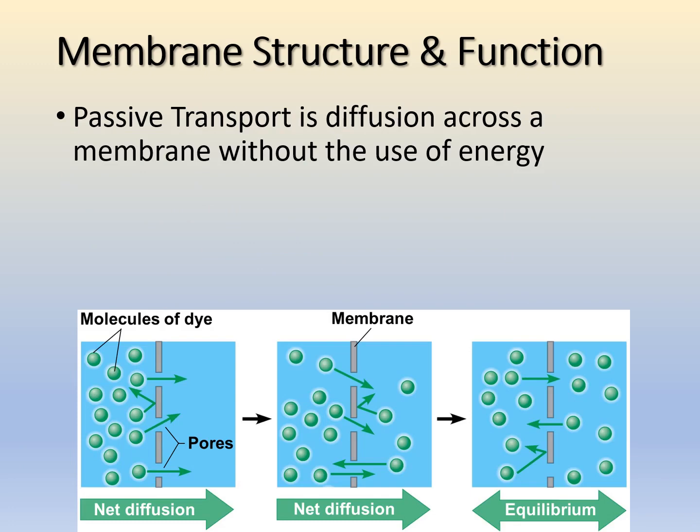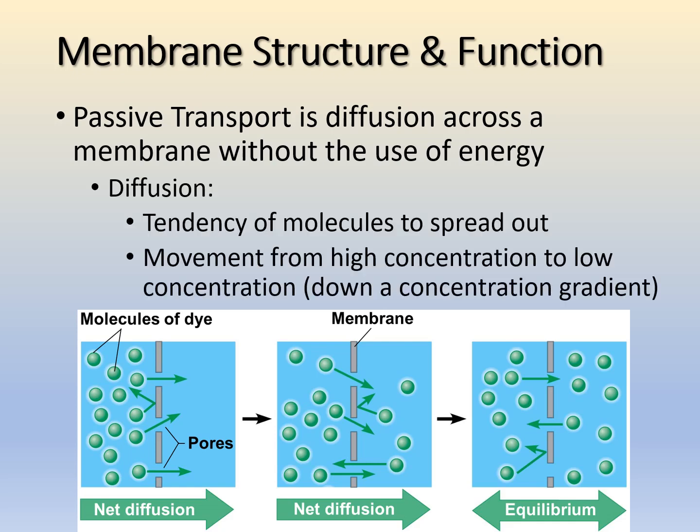Now let's talk about how things pass through the cell membrane — whether that's a passive action or an active action. We'll start with passive transport, which is diffusion across the membrane without the use of energy. Molecules simply diffuse across naturally, requiring no energy input.